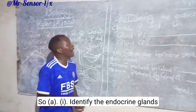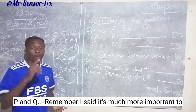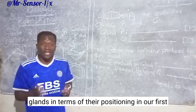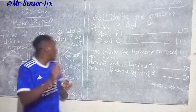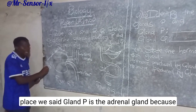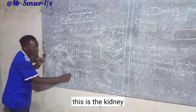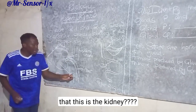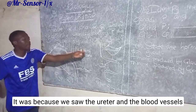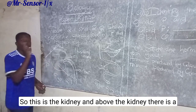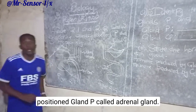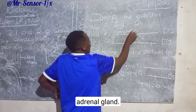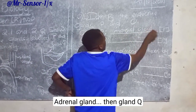Roman number one: identify the endocrine glands P and Q. Remember it is much more important to understand the organs that are linked to these glands in terms of their position. In the first place we said gland P is the adrenal gland because this is the kidney. We are able to identify this as the kidney because we saw the ureter and the blood vessels. Above the kidney there is a positioned gland P called the adrenal gland. So our answer for gland P is: adrenal gland.